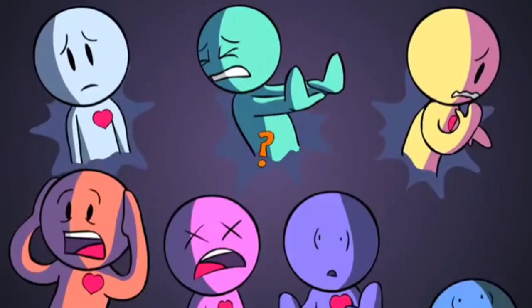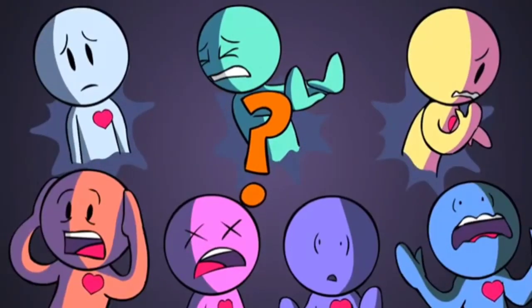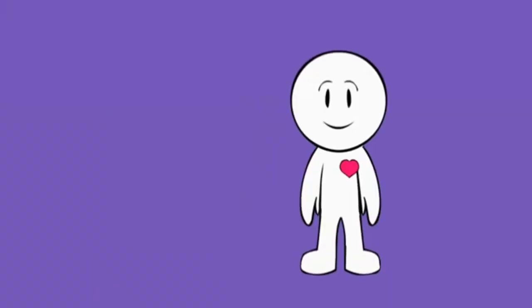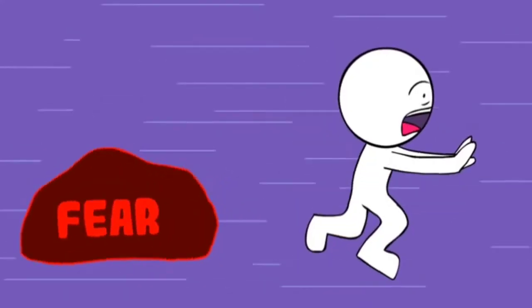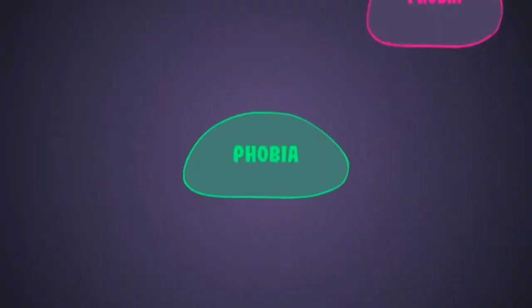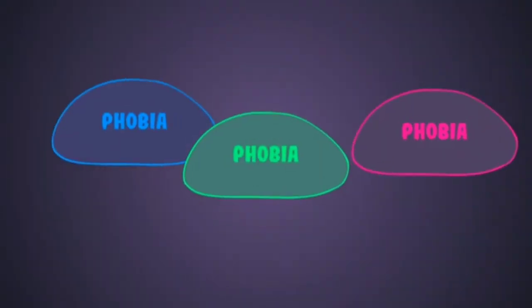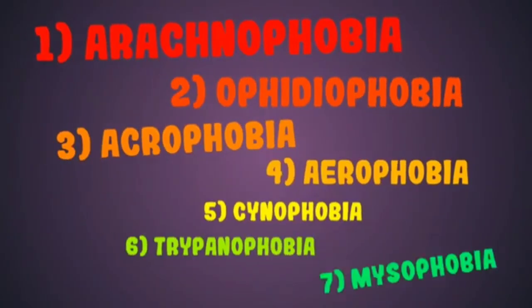So, in the end, where do phobias come from? Well, according to the American Psychological Association, phobias typically emerge during childhood or adolescence, persisting into adulthood. Phobias, unfortunately, are usually not solo travelers. It's more likely to have multiple phobias than just a single one. Also, we have seen here that some are more common than others.